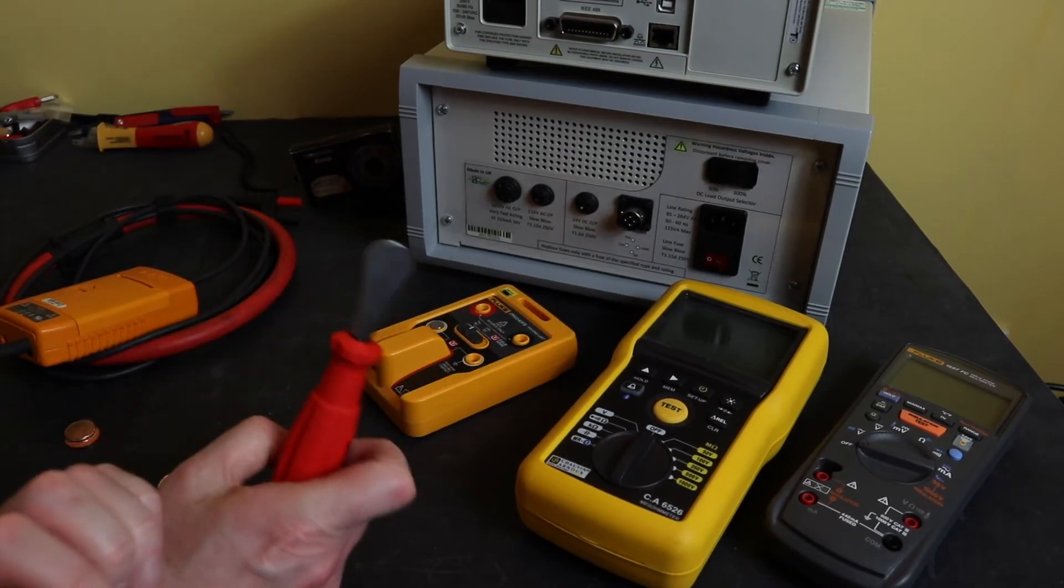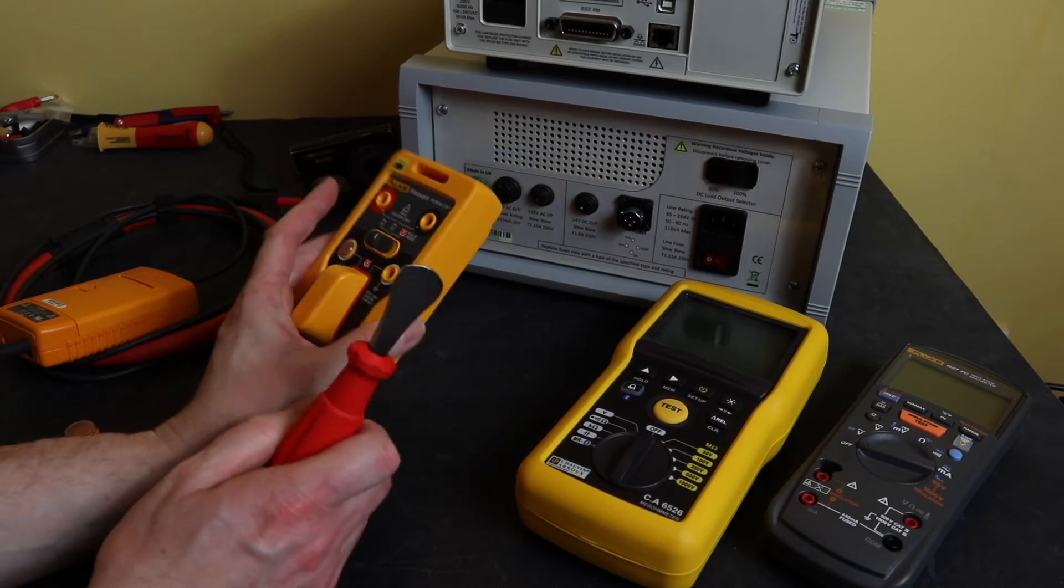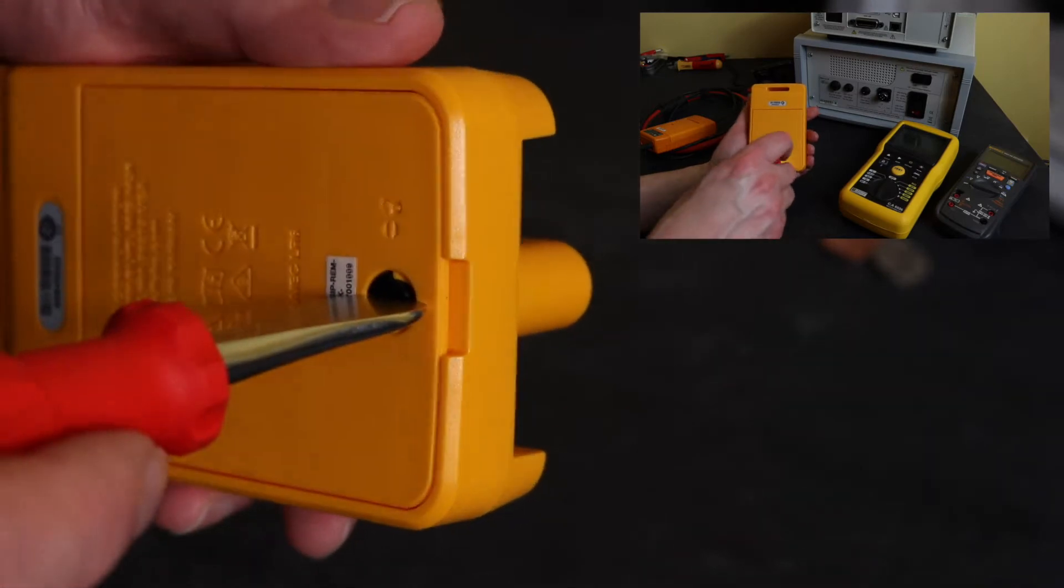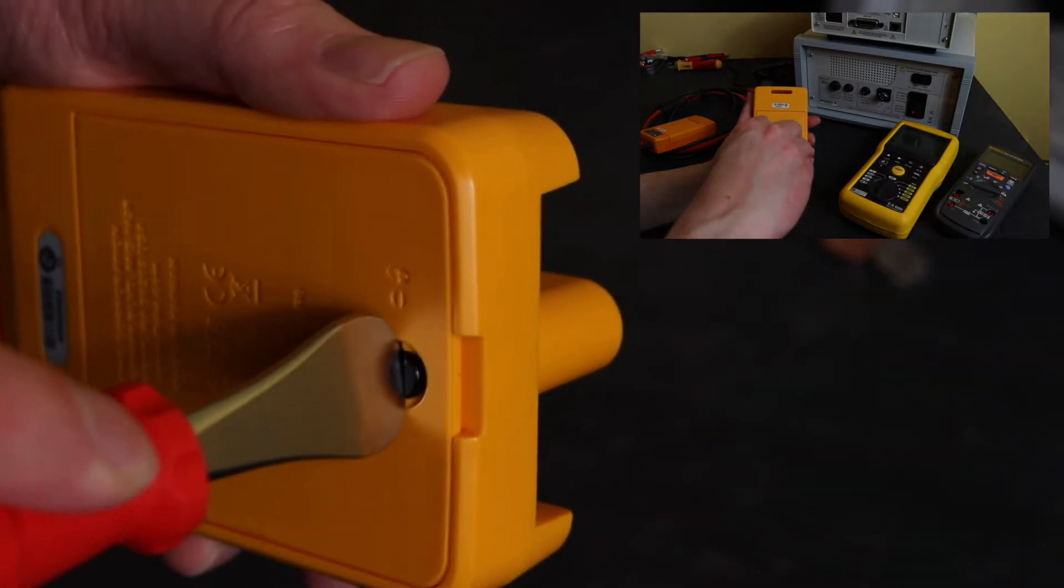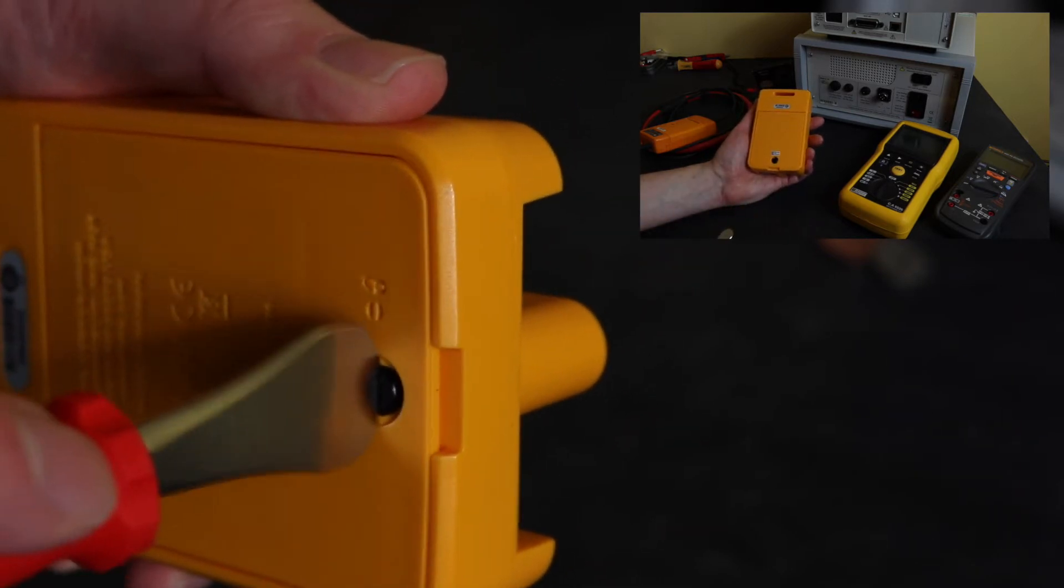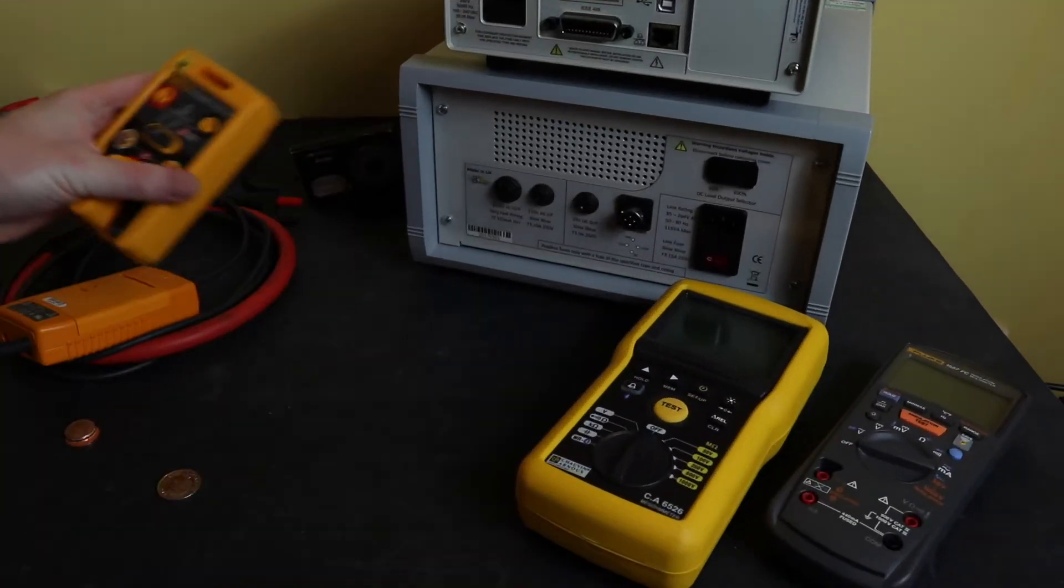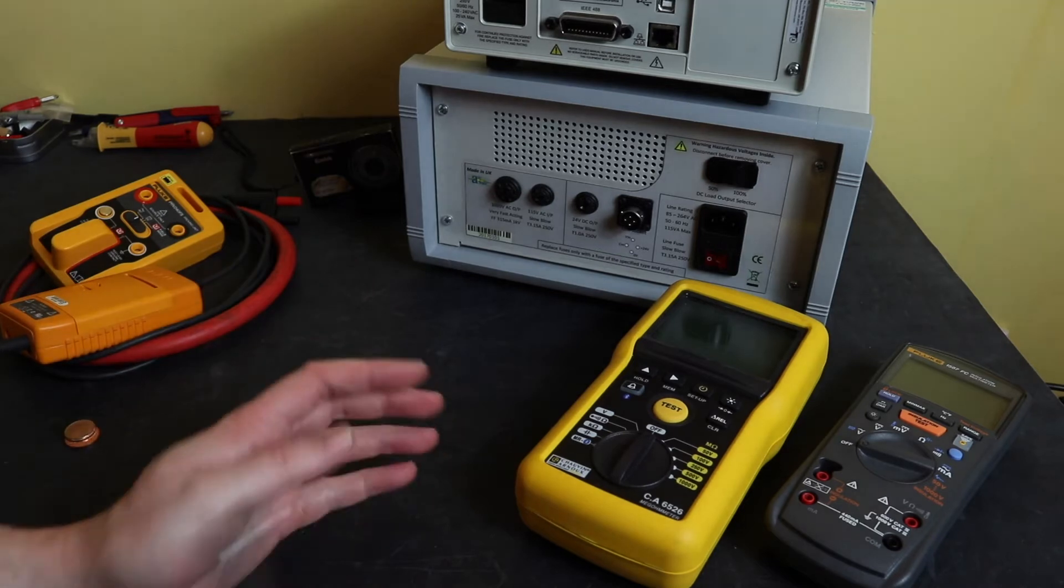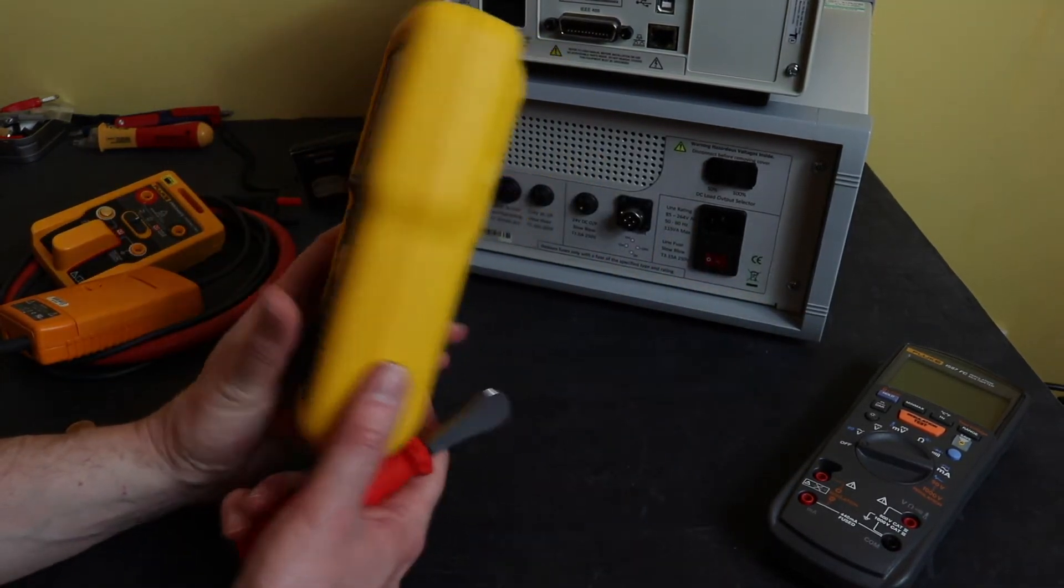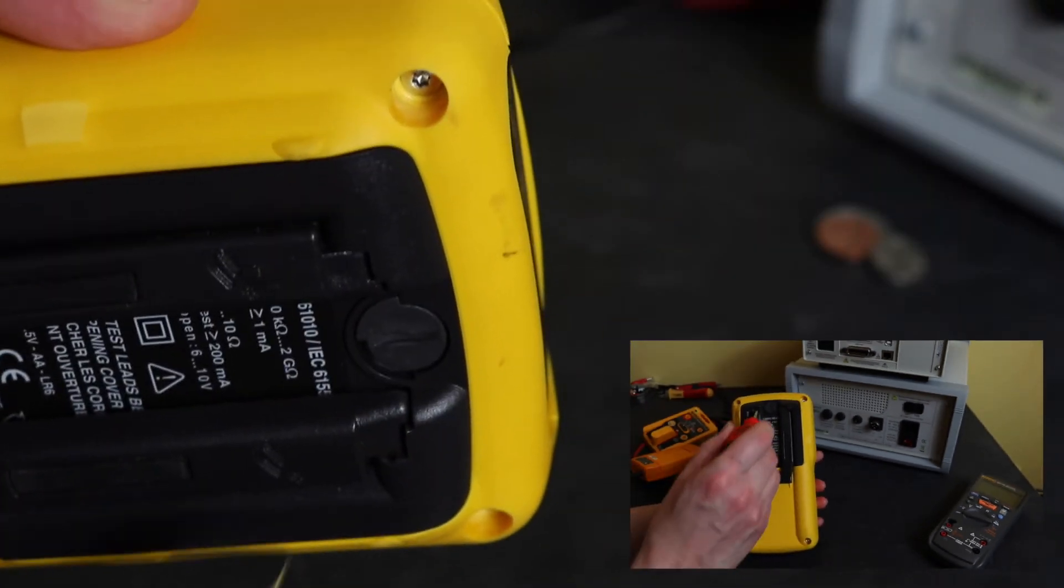We've got a Fluke proving unit here as well. Much narrower screw head in there, but it turns that okay, no problems. We have a Chauvin Arnoux as well. Chauvin Arnoux is another company that sometimes uses this kind of fixture.